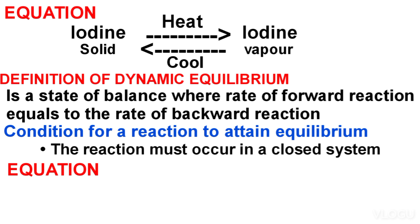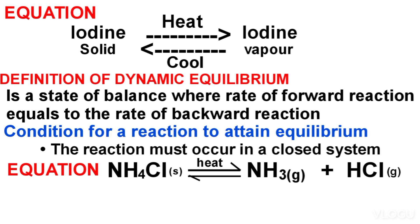Example: when ammonium chloride is heated in a closed container, it decomposes to form ammonia and HCl gas. After some time, ammonia combines with HCl gas to form ammonium chloride, until the reaction attains an equilibrium where the rate at which ammonium chloride decomposes equals the rate at which ammonia and HCl combine to form ammonium chloride.